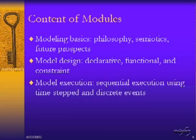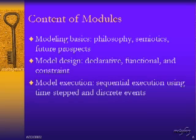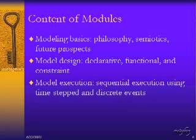The modules are organized into a single web page with links. By pressing on a link, you are taken either to a website or to a module. Modules are denoted by small numbers that appear to the right of a link, referring to the disk on which that module is stored. The modules are broken into three broad categories: modeling basics, including the philosophy, semiotics, language, and future prospects involving the modeling itself; number two, model design with declarative, functional, and constraint model types, these being very similar to the types of programming languages you would find in computer science; and number three, model execution — sequential execution using time-stepped and discrete events.